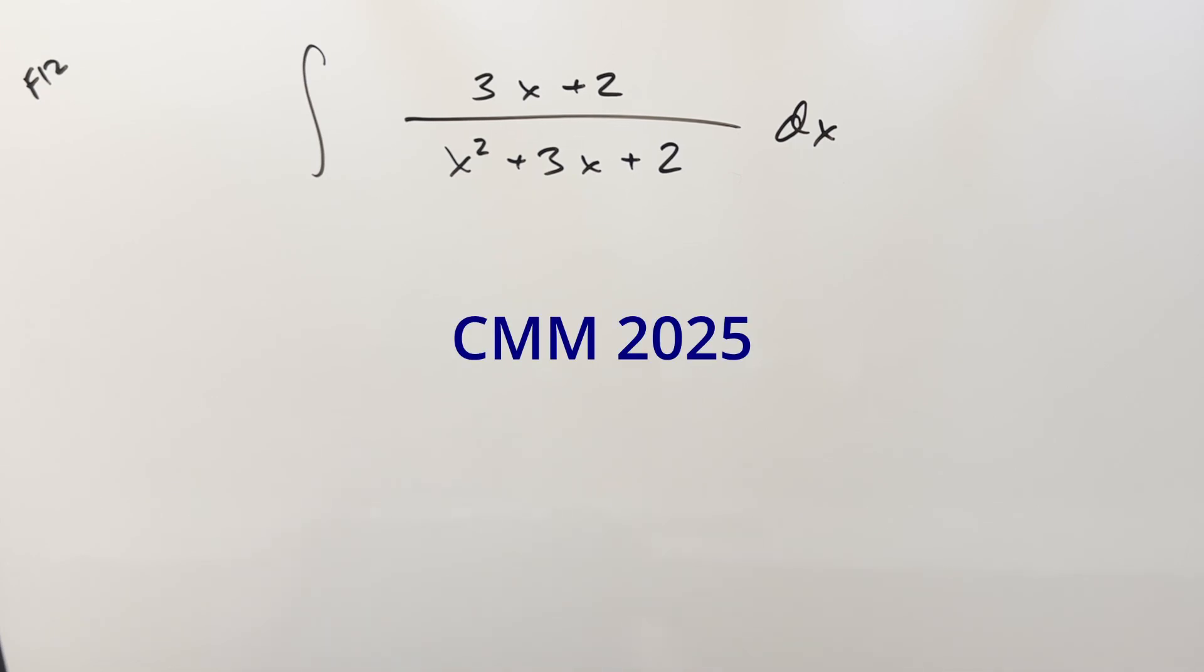We have here another integral from the Caltech MathMeet 2025 finals, number 12. We've got the integral of 3x plus 2 over x squared plus 3x plus 2 dx.